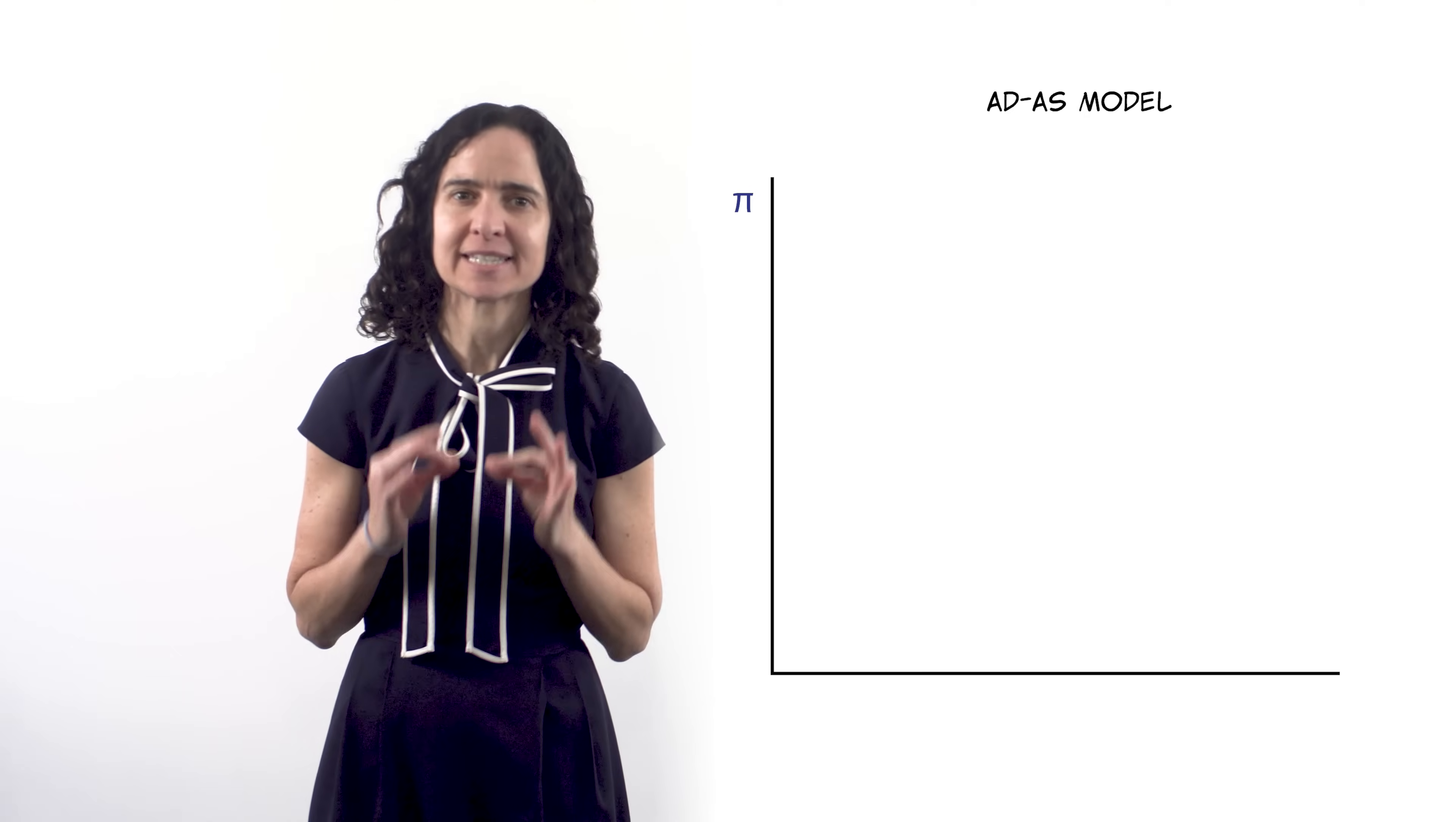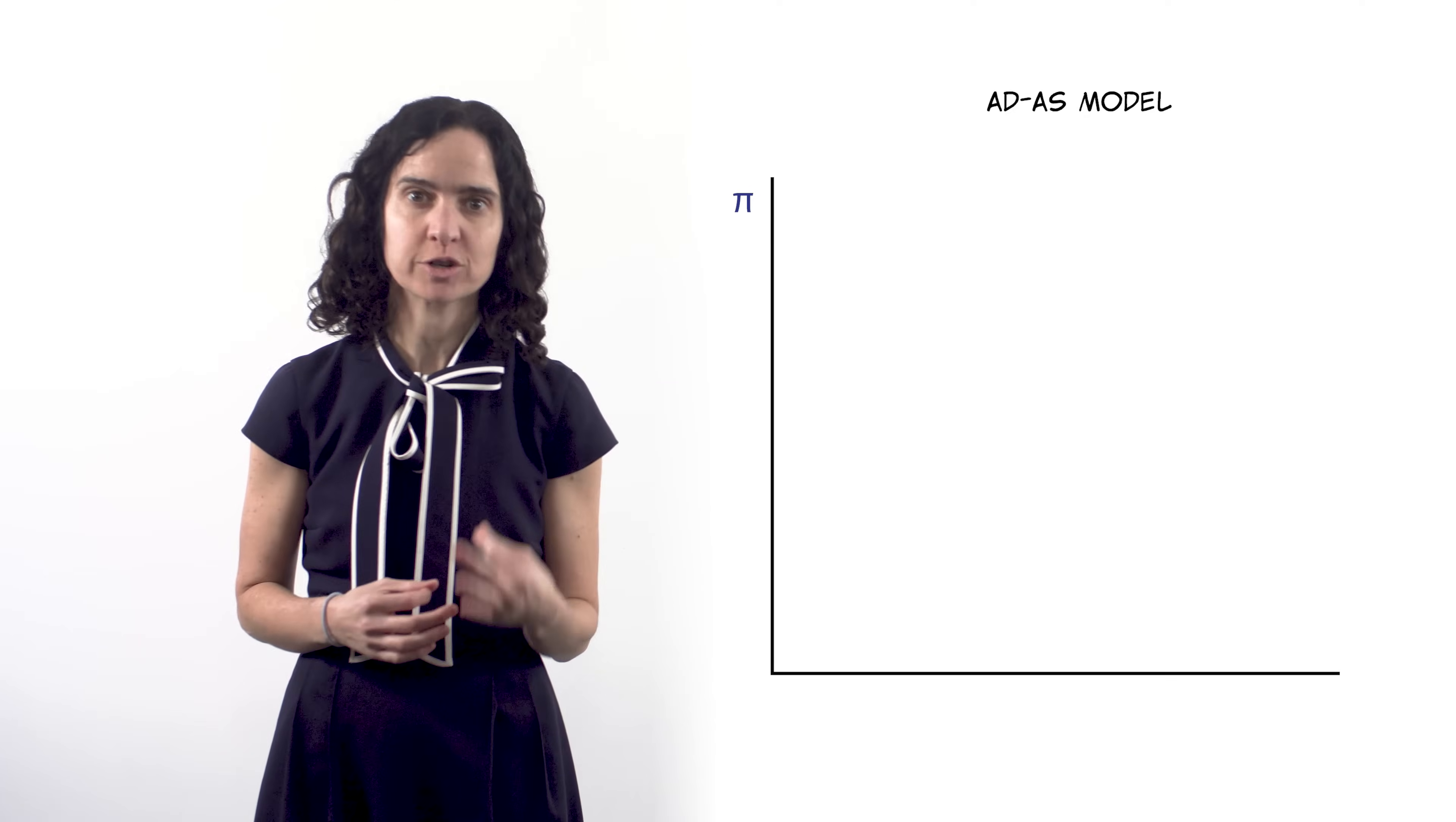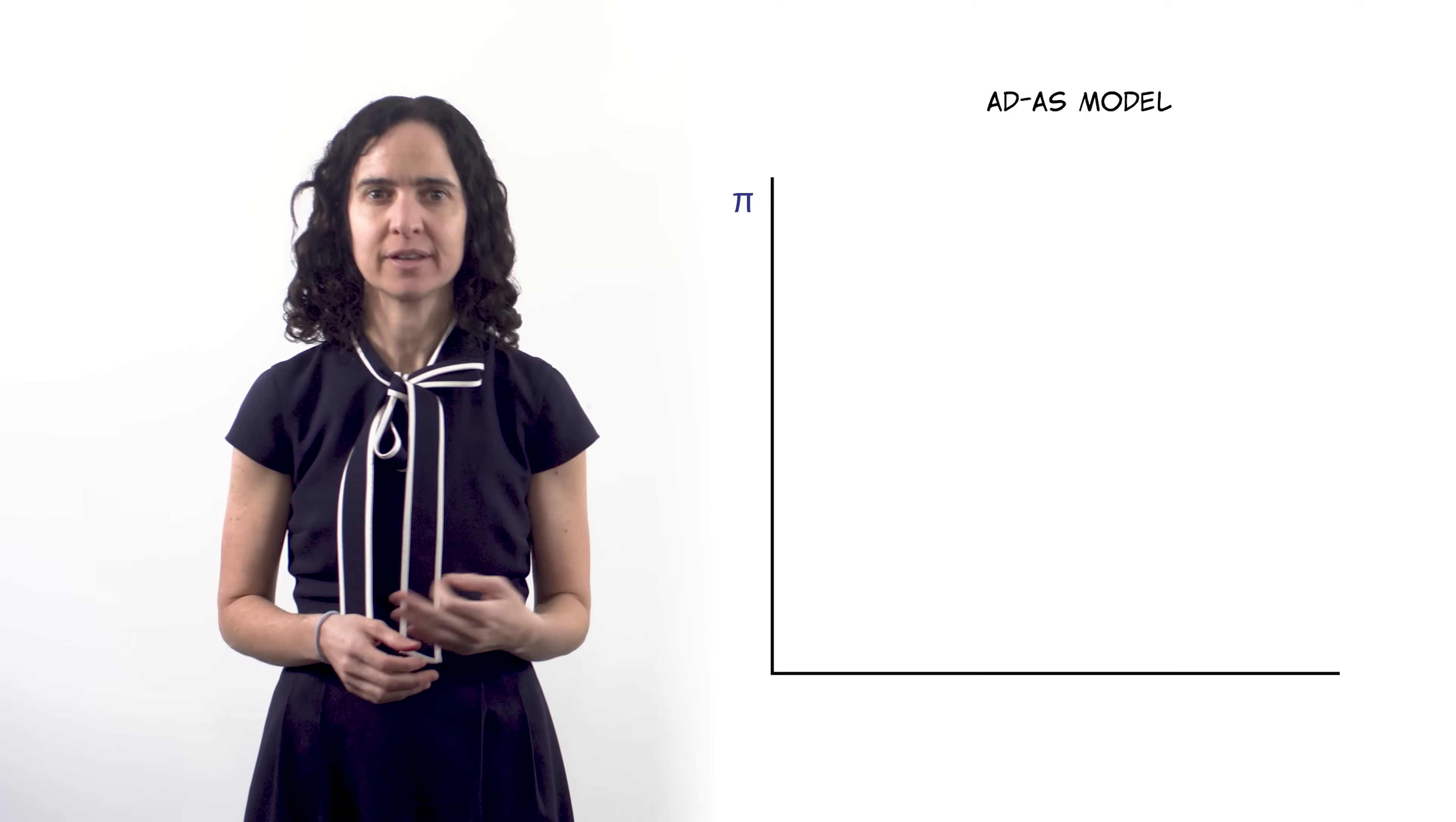On the vertical axis we'll measure the economy's inflation rate denoted by the pi symbol. This is the percentage change in an economy's average price level in a given year. And on the horizontal axis we'll track the economy's real GDP growth rate.